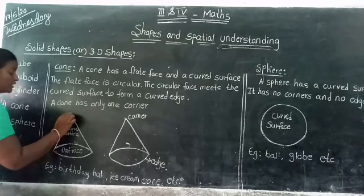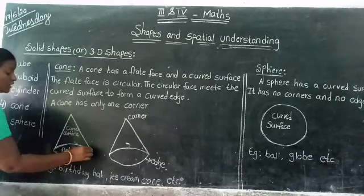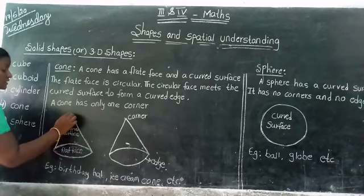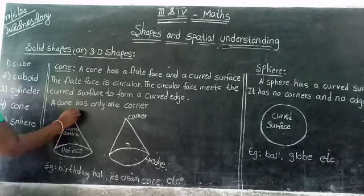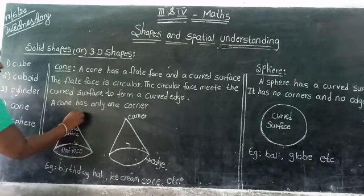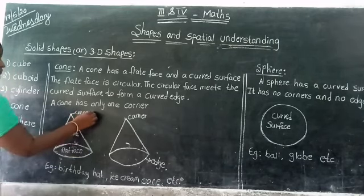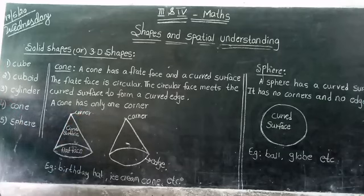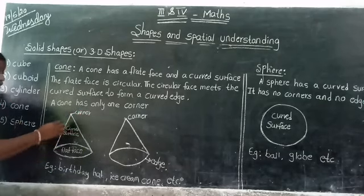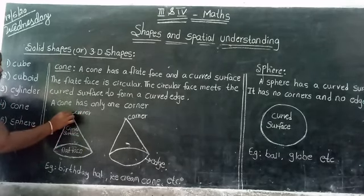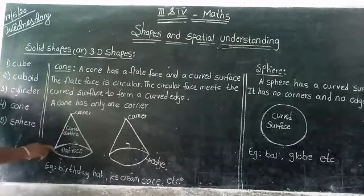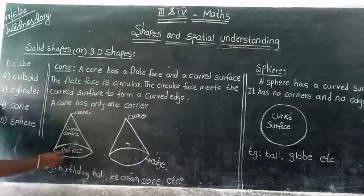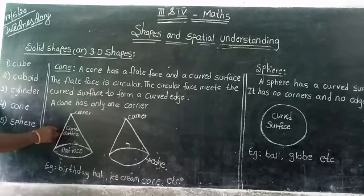A cone has one edge and one corner. A cone has only one corner, one flat surface, and one curved surface.